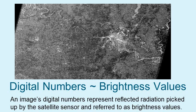For viewing purposes on the computer, brightness values are assigned a shade of grey that ranges from black with a brightness value of 0 to white with a brightness value of 255. So for Landsat satellites 1 through 7, there are 256 possible shades of grey.